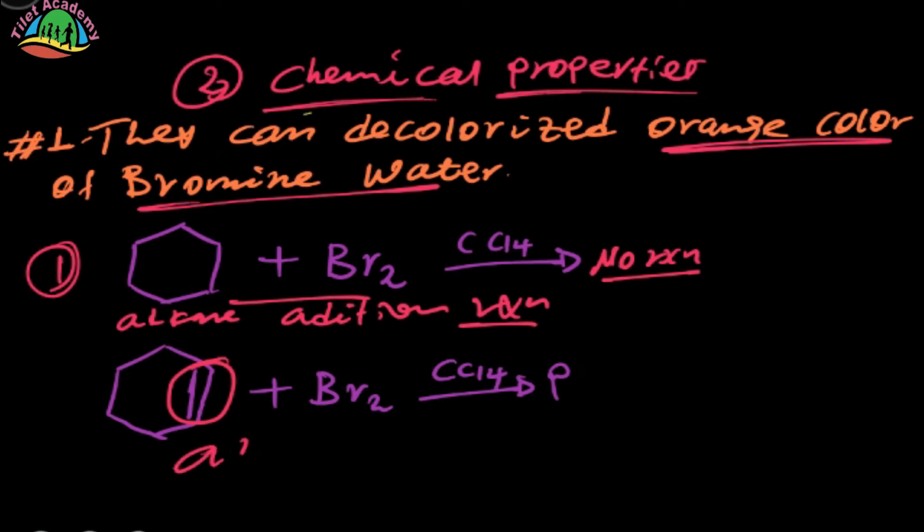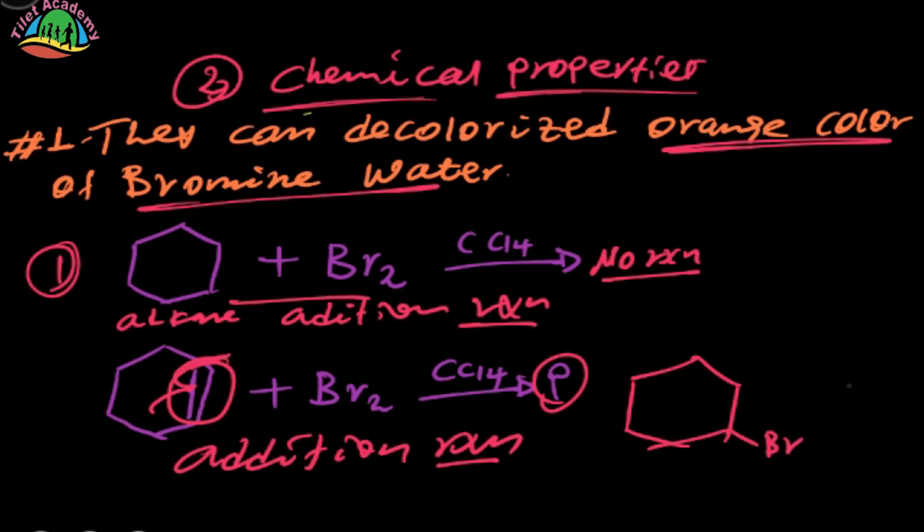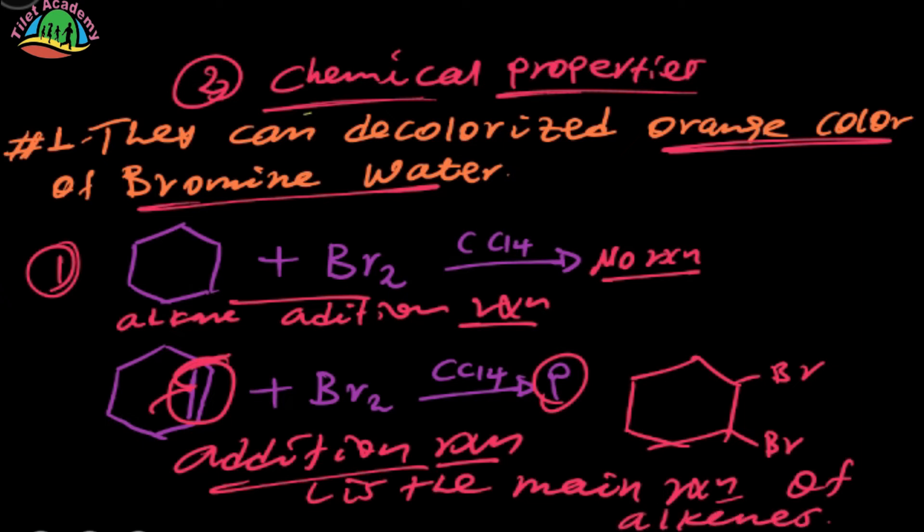Alkene can undergo addition reaction with carbon tetrachloride CCl4. The product is dibromo compound where bromine atoms attach to each carbon of the double bond. The addition reaction is the main reaction of alkene. In the case of alkane, the main reaction is substitution reaction, but for alkene the main reaction is addition reaction.